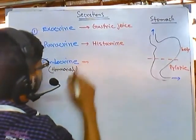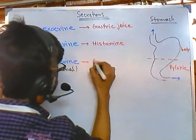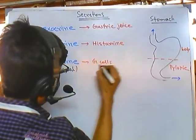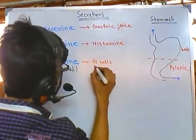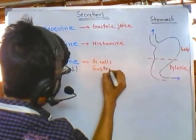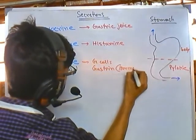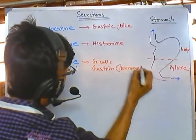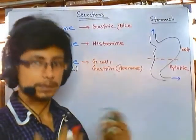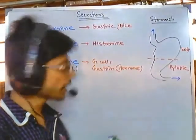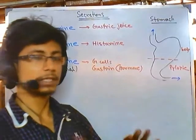Endocrine signaling is brought about by endocrine cells called G cells. The signaling molecule here is gastrin — this is a hormone that is being secreted. We will study the function of all of these later, but these are the major secretory molecules being secreted from the stomach.